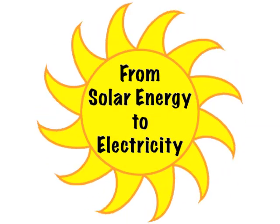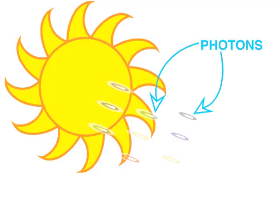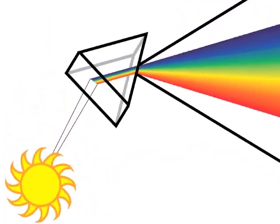From solar energy to electricity. Energy travels from the sun as particles of light called photons. Photons are packets or envelopes of energy. Different photons have different energies.